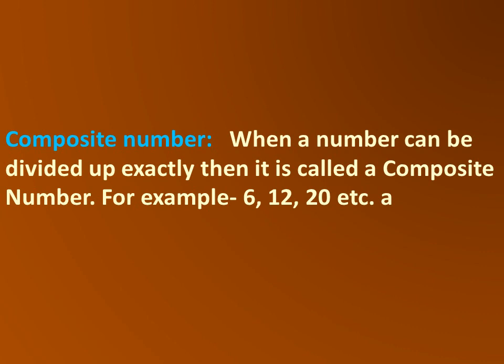A composite number: when a number can be divided exactly — that is, when dividing leaves no remainder — then it is called a composite number. For example, 6, 12, 20, etc. When a number can be divided easily and no remainder is left, we call it a composite number.